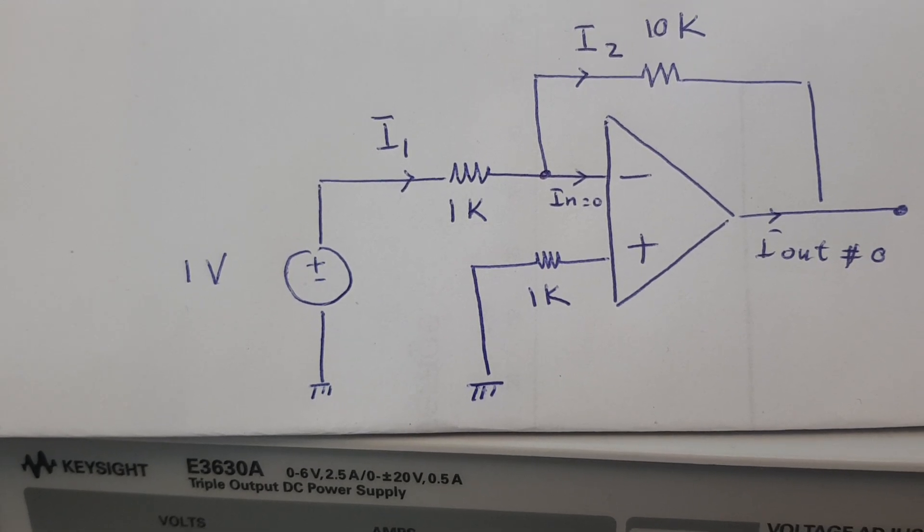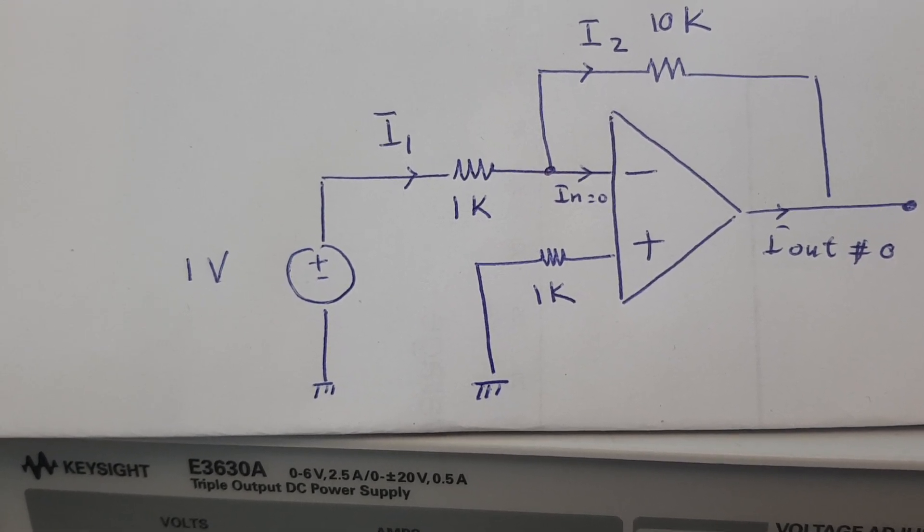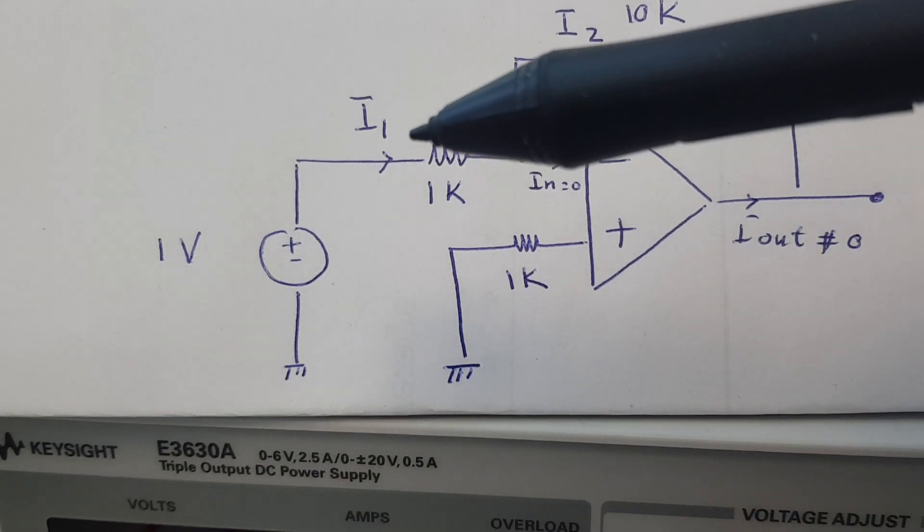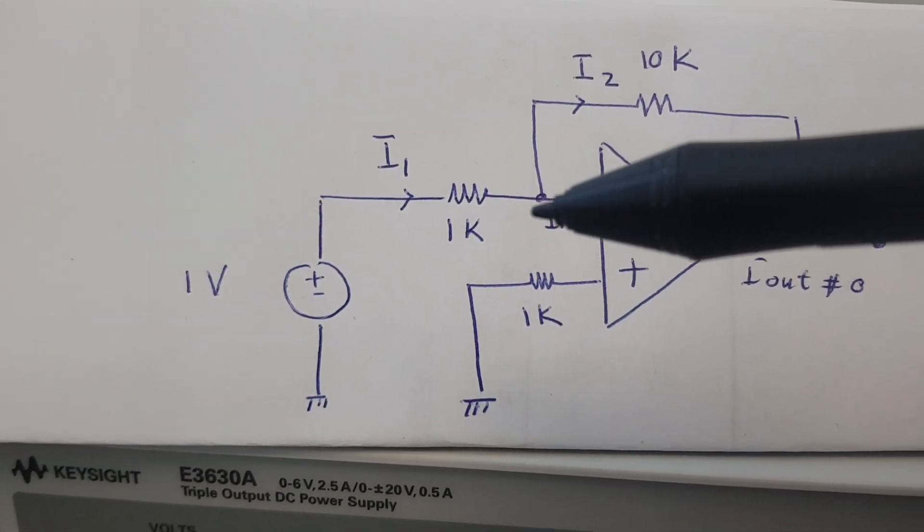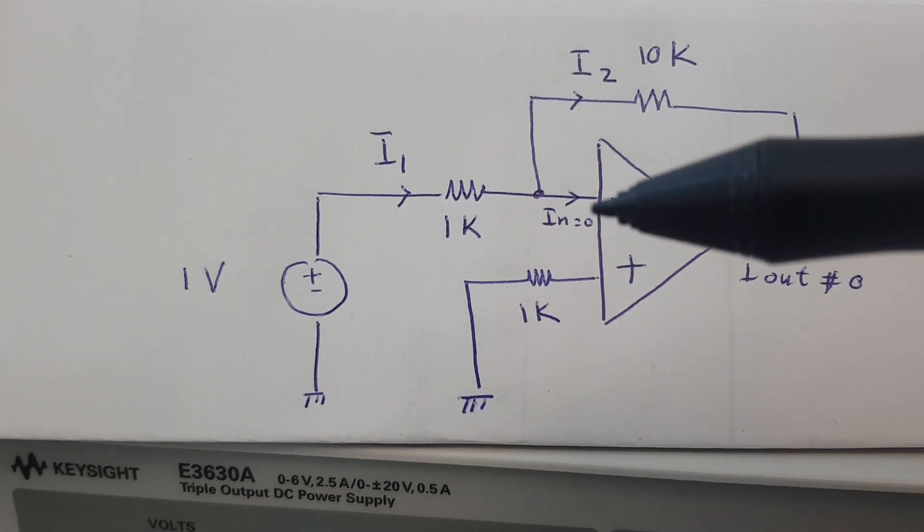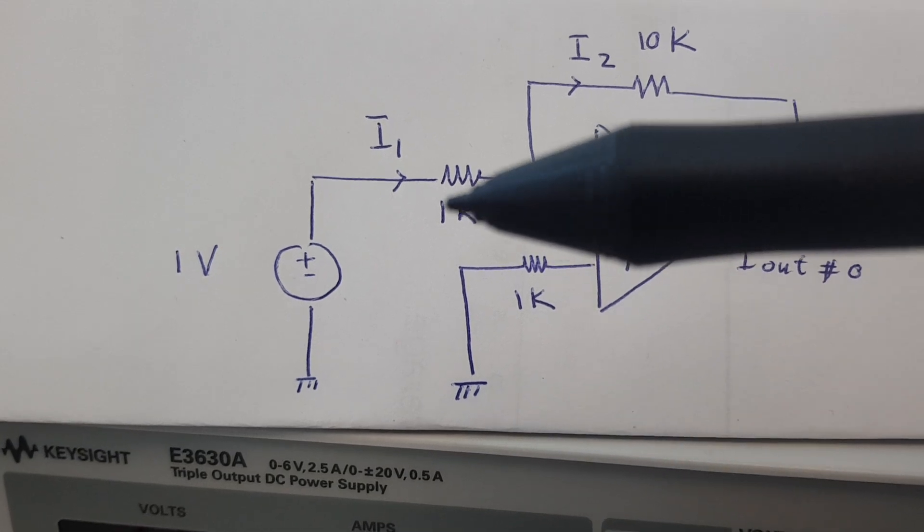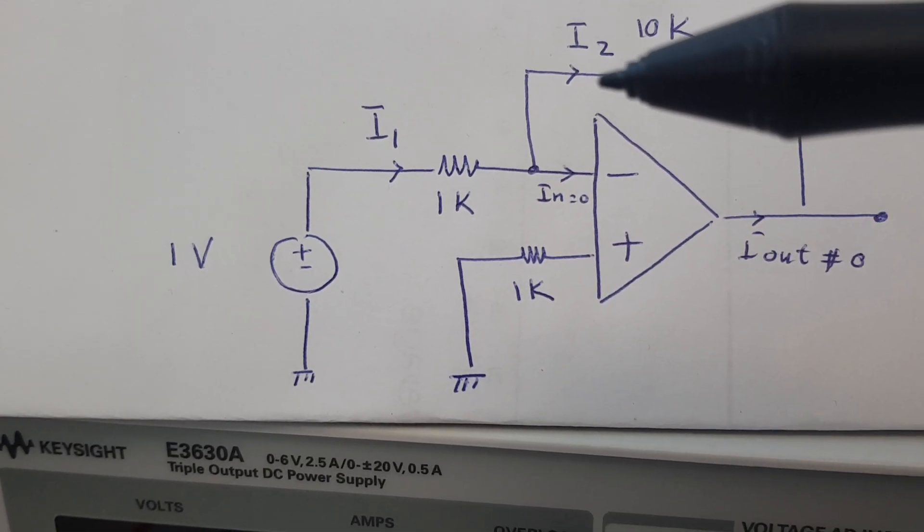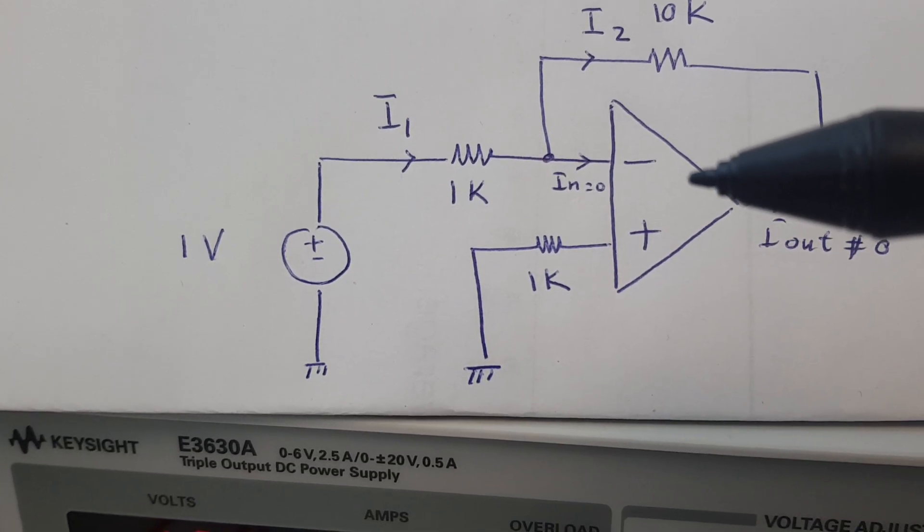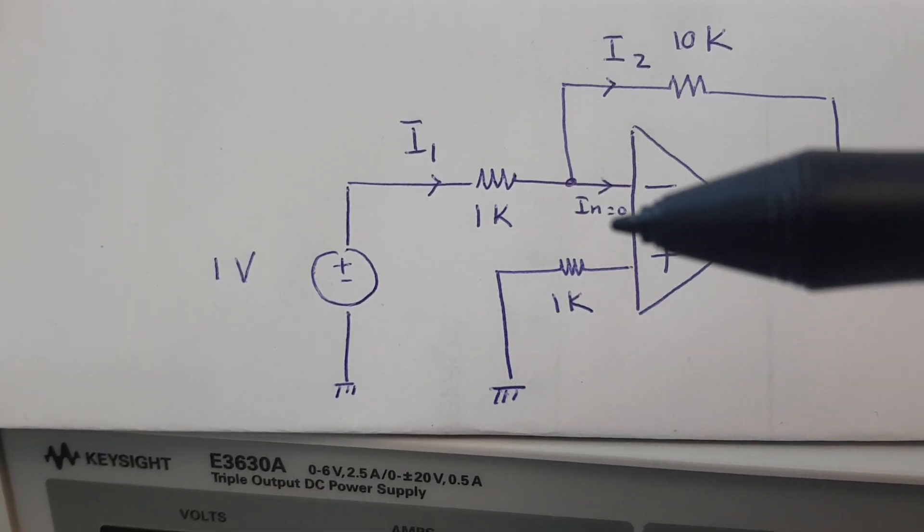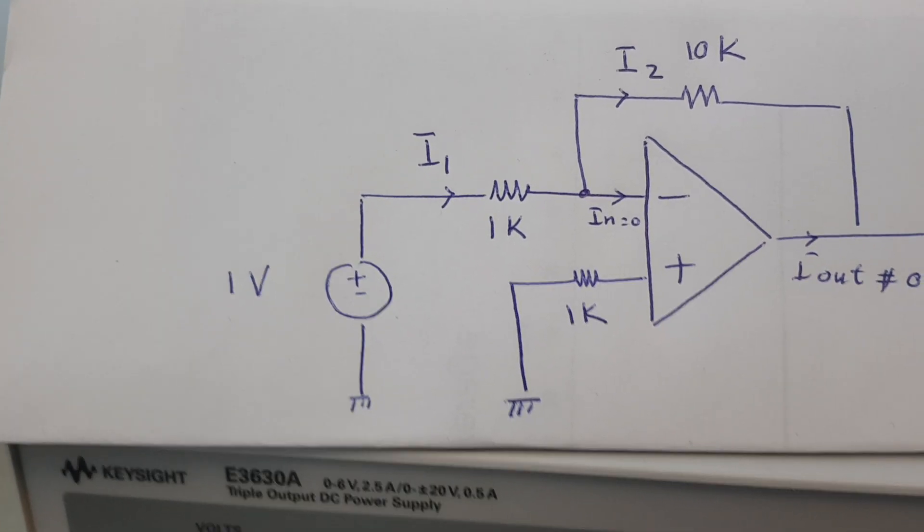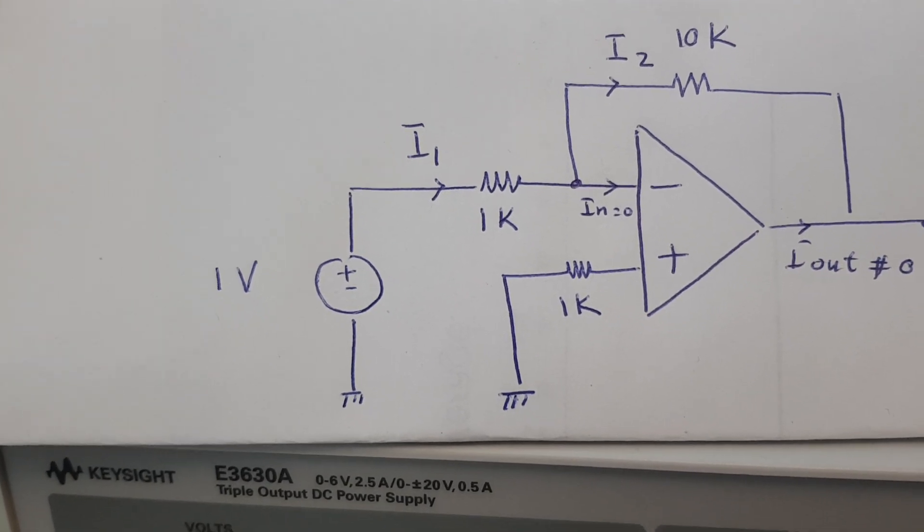Now I will do a demonstration of an actual op-amp circuit and we will measure both I1 and I2. If we apply KCL here, I1 is equal to I_in plus I2. So if I1 and I2 are exactly the same, then that proves that I_in is basically equal to zero. But if they are not equal, this means that your I_in is not equal to zero and we will talk about that at the end of the video.